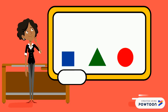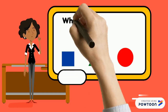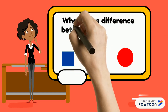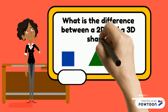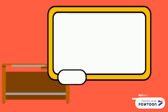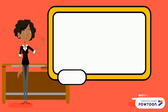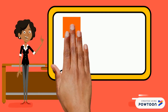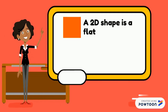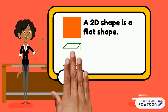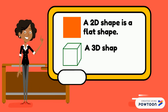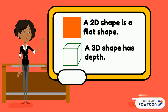Now I have a question for you. What is the difference between a 2D and a 3D shape? I'm sure you came up with lots of differences, but the main difference is that a 2D shape is a flat shape, such as the square, and a 3D shape has depth, such as a cube.